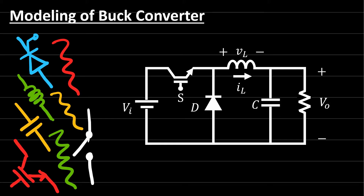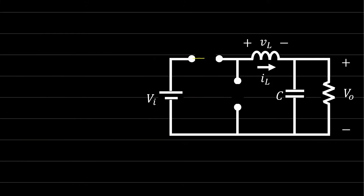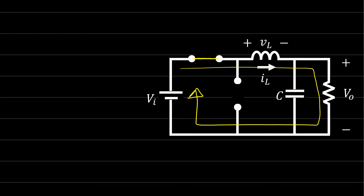Last lecture we studied the modes of operation in the buck converter and we found that the active switch can have two states: either the on state or the off state. When the active switch is in the on state, the current is flowing in this direction, and the voltage across the inductor is equal to L di/dt, which is V_input minus V_output.